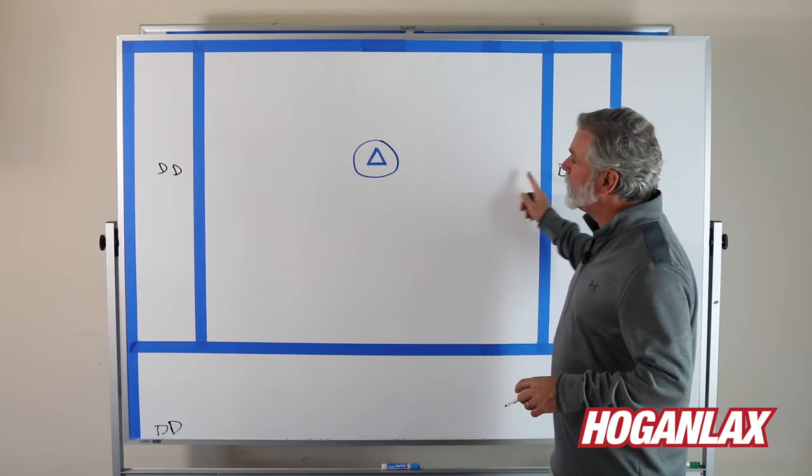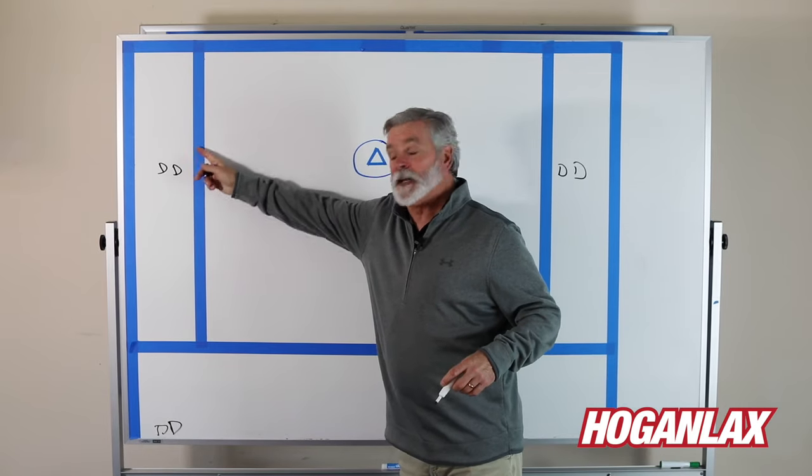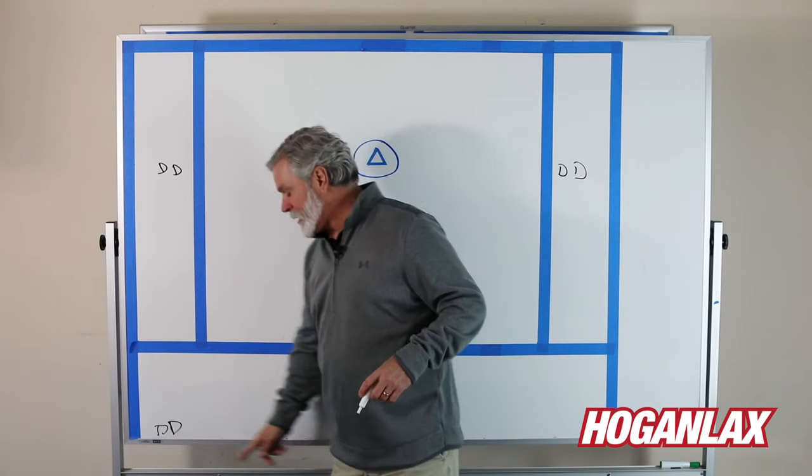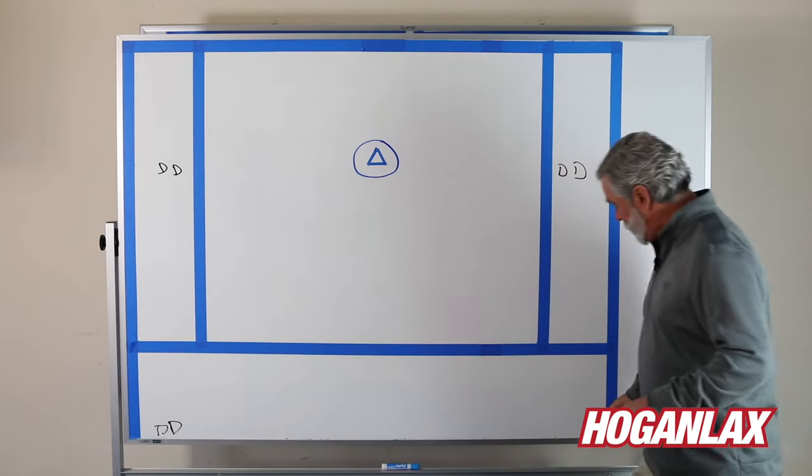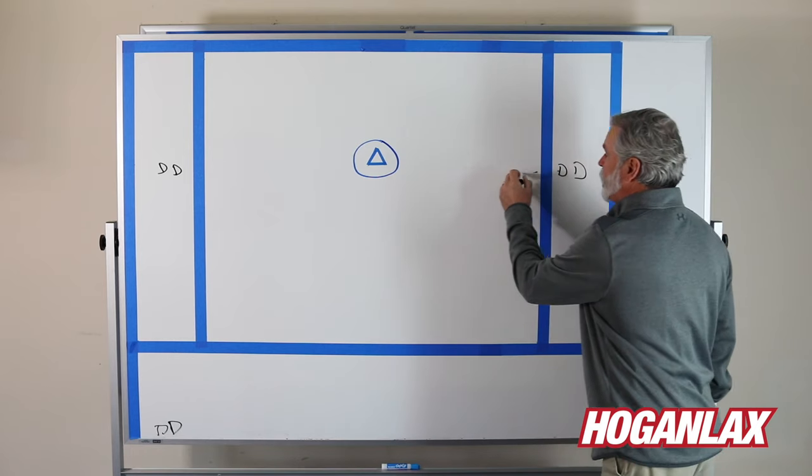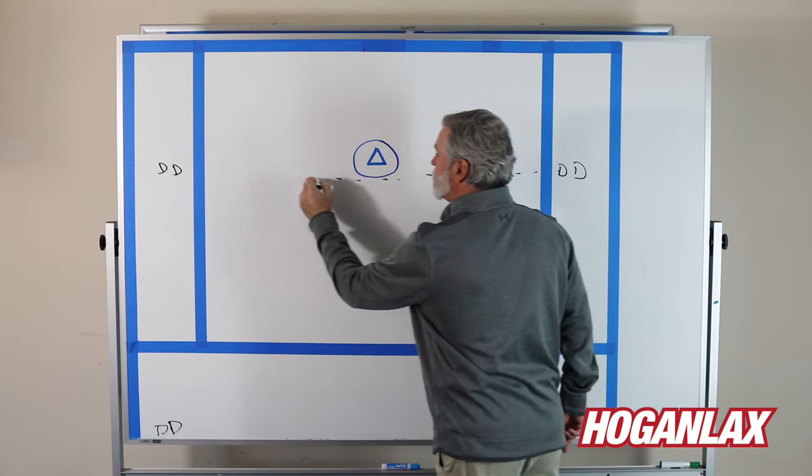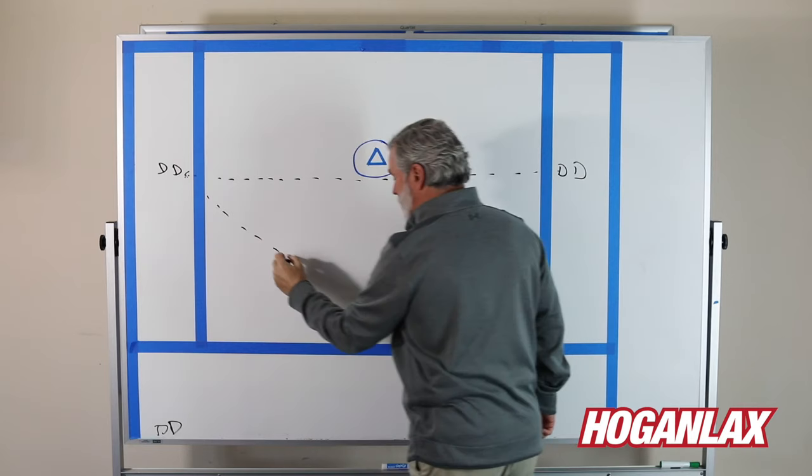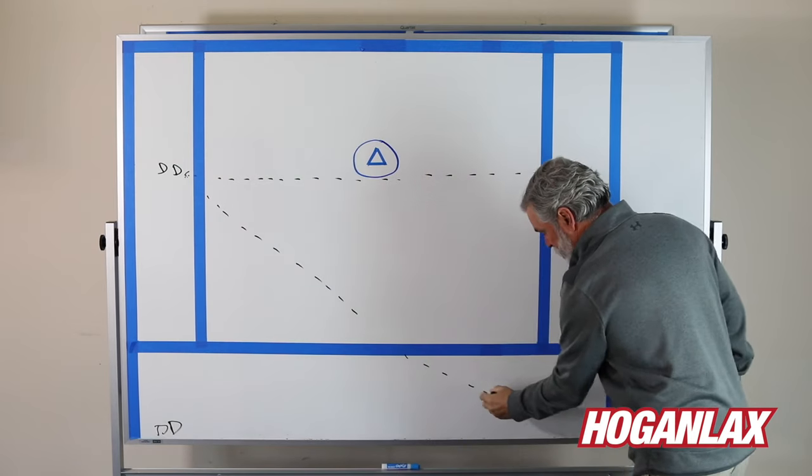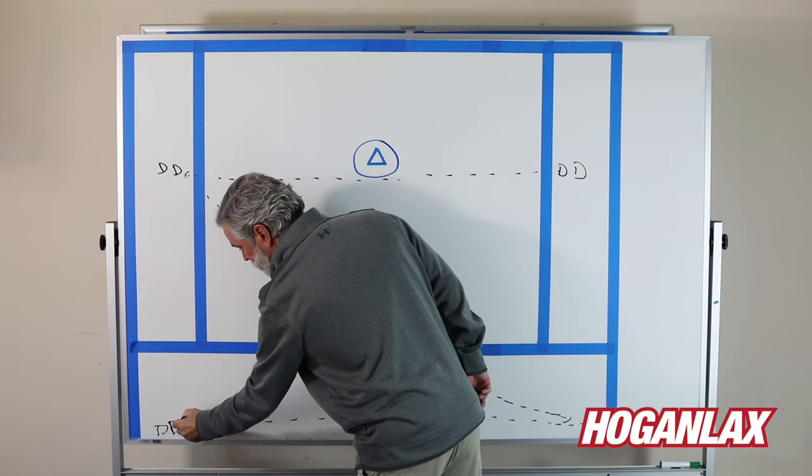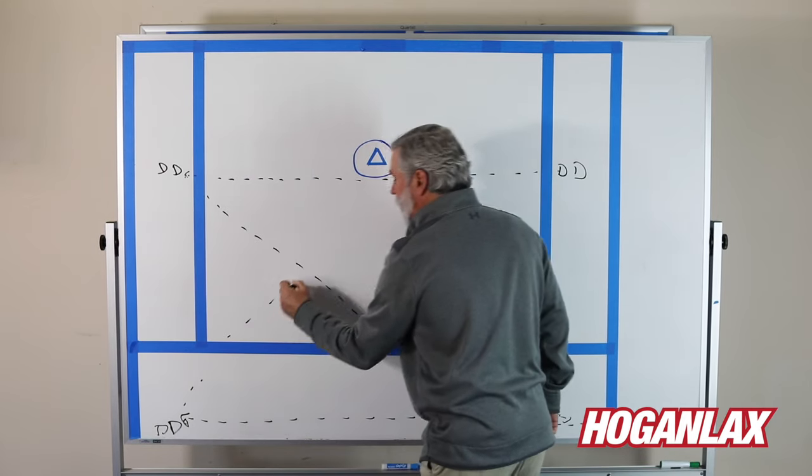You got line defensemen, goal line extended, line defensemen, goal line extended, and restrain line, line defensemen, long stick middies at the midline and sideline, and a line defensemen at the midline and sideline. So what we'd say is these guys threw the ball cross field, then these guys threw the ball diagonal, then these guys threw the ball cross field, then these guys threw the ball diagonal.